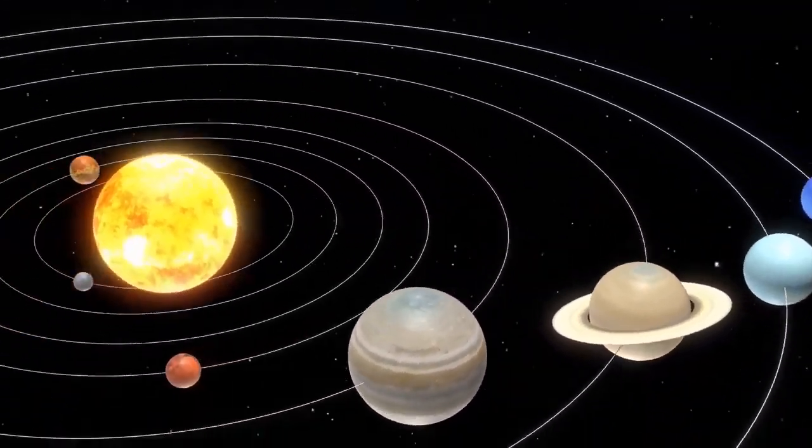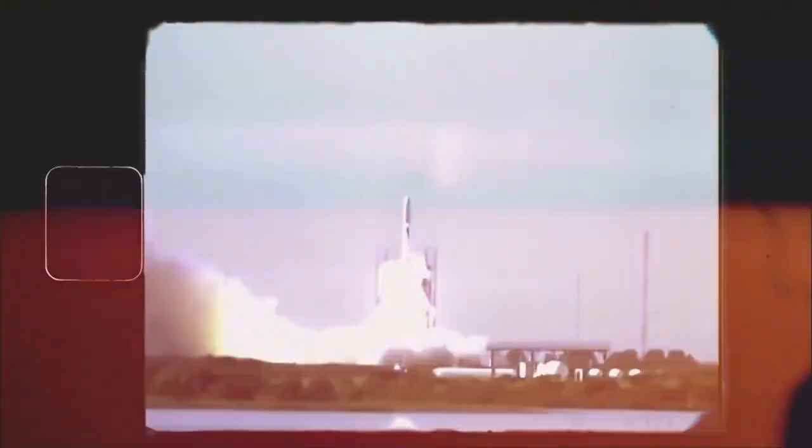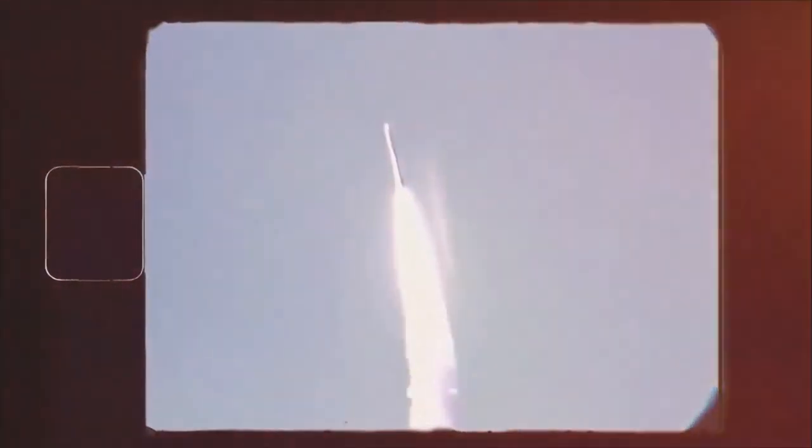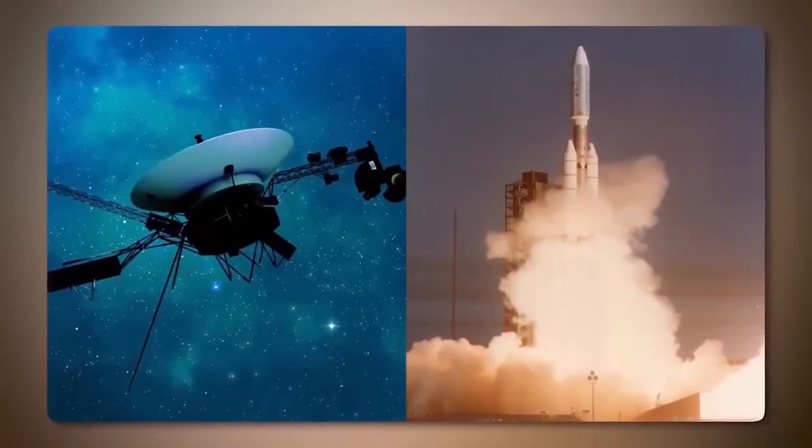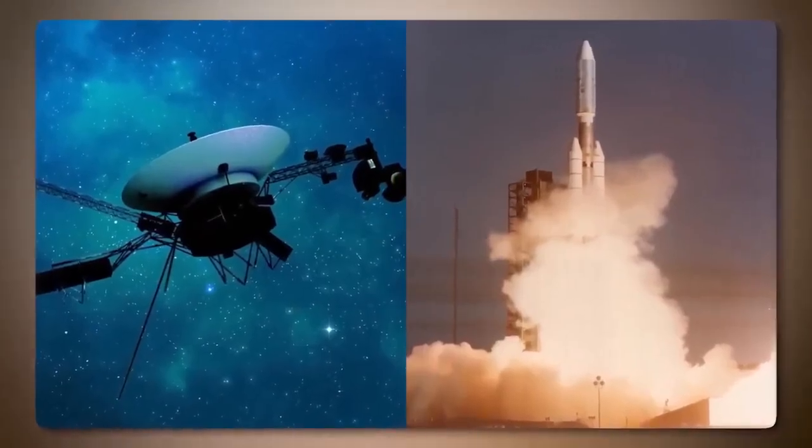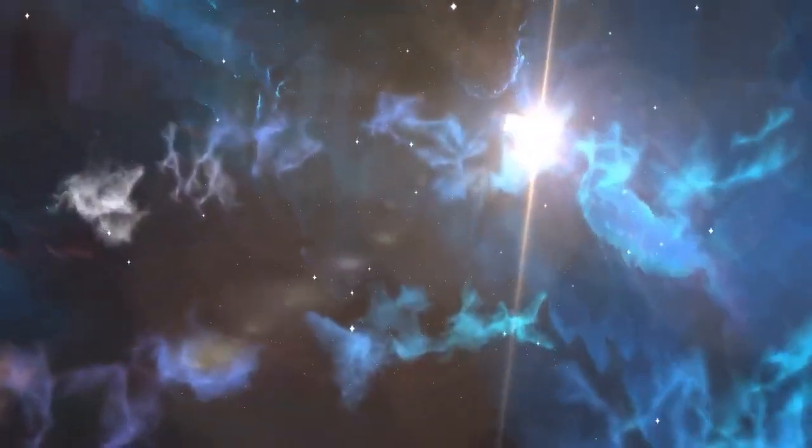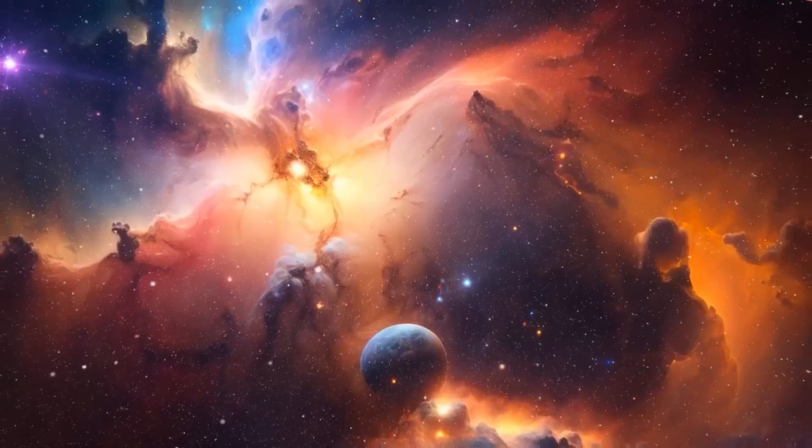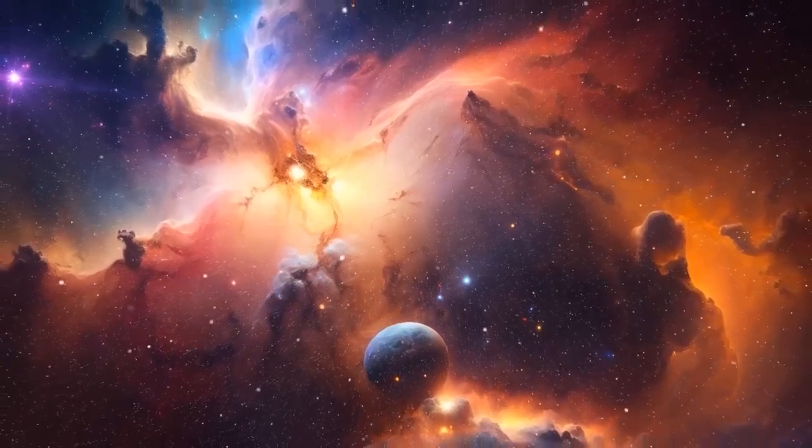The Voyager missions capitalized on a rare planetary alignment that occurs once every 107 years, allowing the spacecraft to perform gravitational slingshots from one planet to another, conserving their limited fuel. Despite launching second, Voyager 1 was the first to reach Jupiter and Saturn, focusing on these planets while Voyager 2 explored Jupiter, Saturn, Uranus, and Neptune.